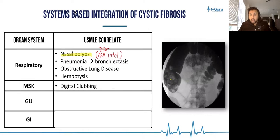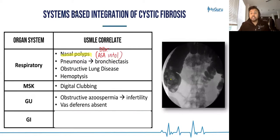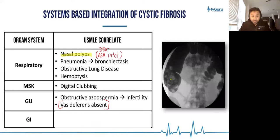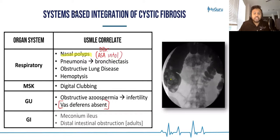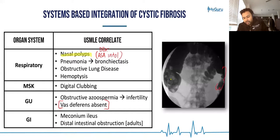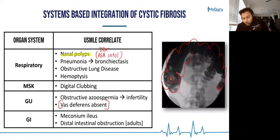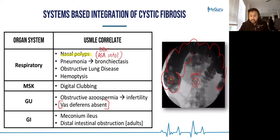From an MSK standpoint, you're going to have digital clubbing. From a genitourinary standpoint, these patients have thick secretions in their GU system — think obstructive azoospermia. They may even have an anatomic defect: the vas deferens may be absent. From a GI standpoint, they can have meconium ileus, and in adults, due to thick secretions, they can have distal intestinal obstruction — you can see a mucus plug in the colon. This presents as acute abdominal pain, bloating, and colonic dilatation in a patient with cystic fibrosis.